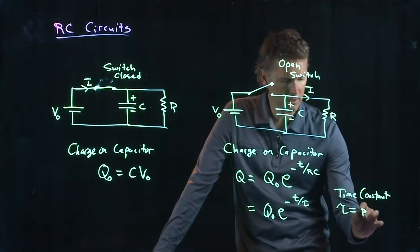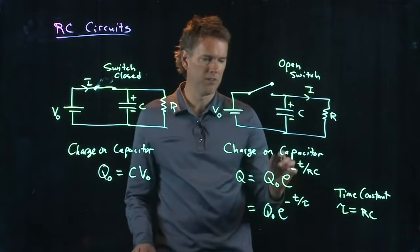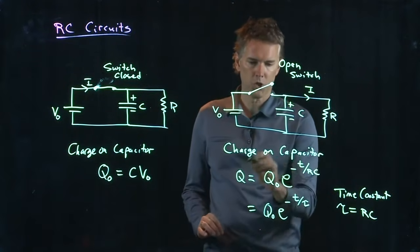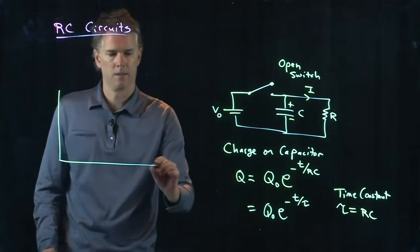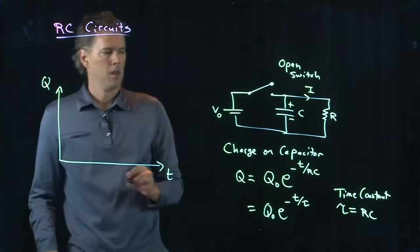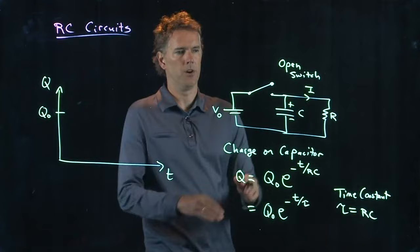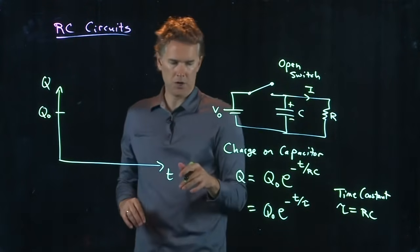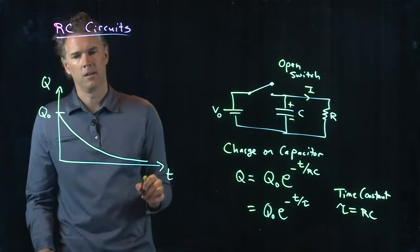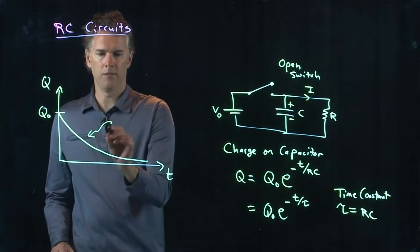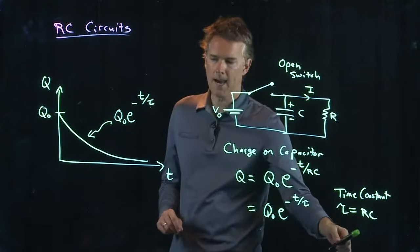Tau is called the time constant, not to be confused with torque, right? We use Tau for torque, unfortunately. But now, Tau is just the time constant of that circuit, okay? And it's equal to RC. So, if you think about what the charge on the capacitor looks like as a function of time, we can draw it up. It started at T equals zero and a value of Q naught. That's how much charge was on our capacitor. But then it started to discharge, and it decayed exponentially. And so it fell like this. Okay, and what's the shape of that curve? It's exactly that. Q naught E to the minus T over Tau, where Tau equals RC.